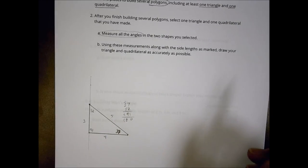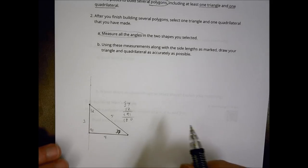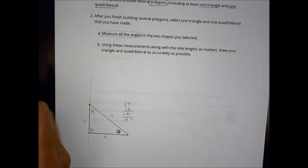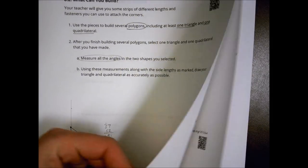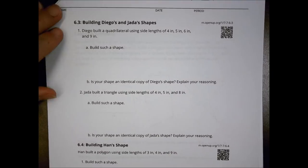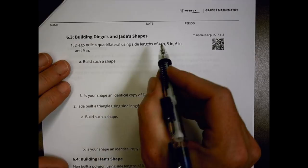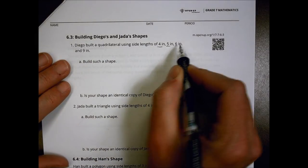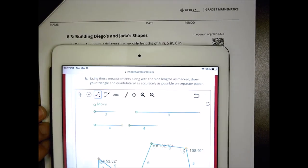You can do the same with your quadrilateral — try to sketch it out as best you can. Just for the sake of time I'm not going to sketch mine, since I already drew it in the applet. Now let's look at Activity 3: Building Diego and Jada's shapes. Diego built a quadrilateral using side lengths of four, five, six, and nine, and it wants us to build that shape.